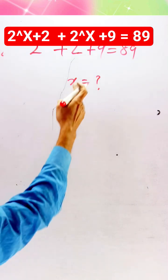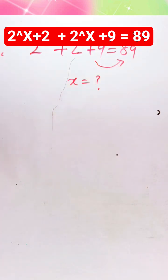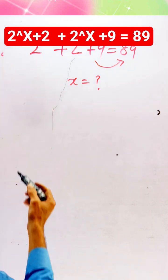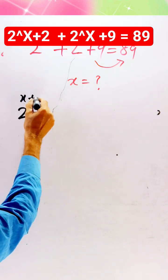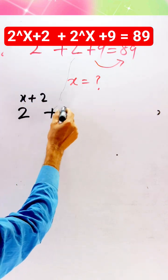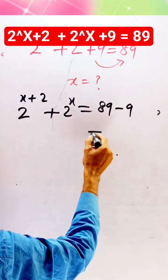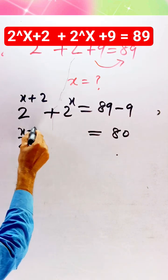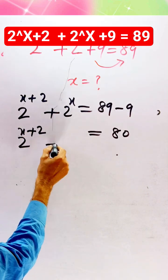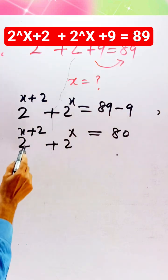In this type of question, first of all we check the constant value and transform the constant term to the right side, so the sign also changes. This gives us: 2^(x+2) plus 2^x is equal to 89 minus 9, which equals 80.